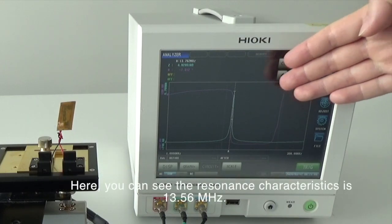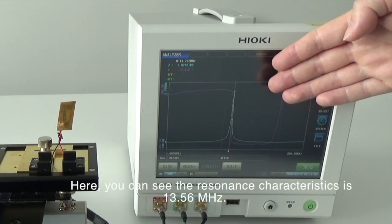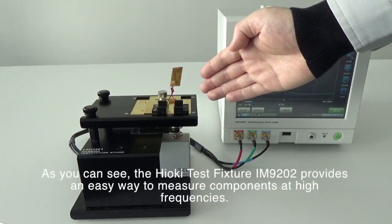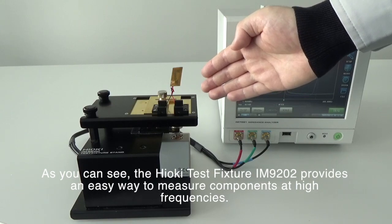Here you can see the resonance characteristics is 13.56 MHz. As you can see, the Hioki test fixture IM9202 provides an easy way to measure components at high frequencies.